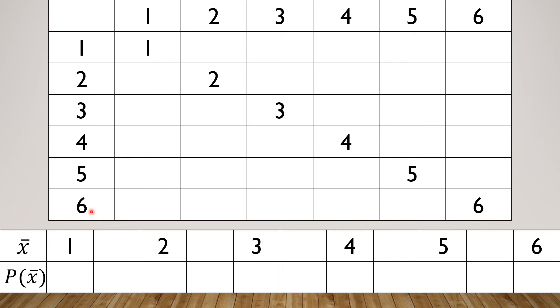Now what we are going to do on our synchronous meeting is to fill out this table by numbers, which is the mean of the number on the top and the number to the left. This one is the sampling distribution, but it is not yet complete. We still have some cells to fill out, and we are also to determine its corresponding probability.